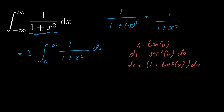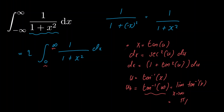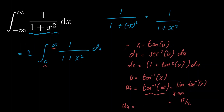Now all we need to do is rewrite our limits of integration using the substitution. We have u is equal to inverse tangent of x. For our upper limit of integration, we would have inverse tangent of infinity, but this is undefined so we rewrite it as a limit: the limit as x goes to infinity of inverse tangent of x, which equals π/2. For our lower limit, inverse tangent of 0 is just equal to 0.